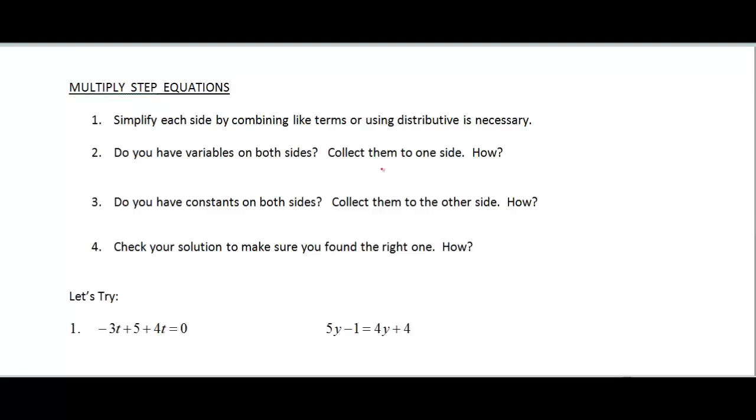So we need to simplify each side by either combining like terms or using the distributive property. And then if we have variables on both sides, we need to make sure that we collect them to one side. And if we have constants on both sides, we need to take them to the other side. And then, of course, we check our solutions.